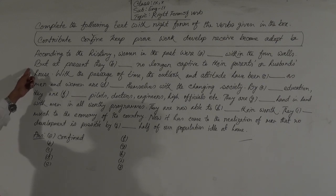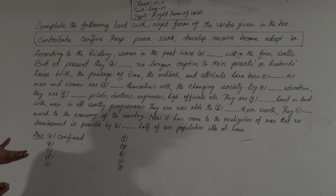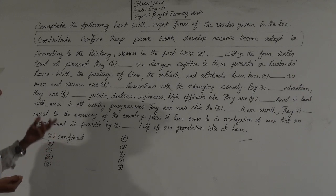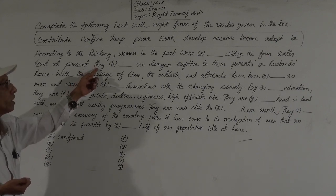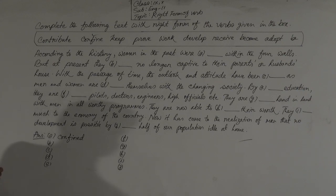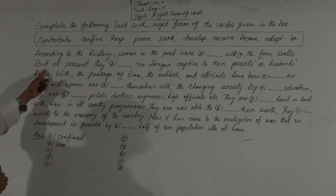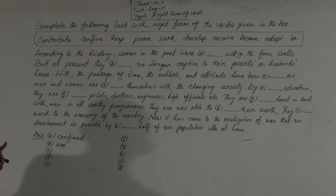Second sentence: but at present, they dashed no longer captive to their parents' or husband's house. We can use a be-verb in present tense. The subject is 'they,' so we use 'are.' Gap B will be 'are.' The sentence reads: but at present, they are no longer captive to their parents' or husband's house.